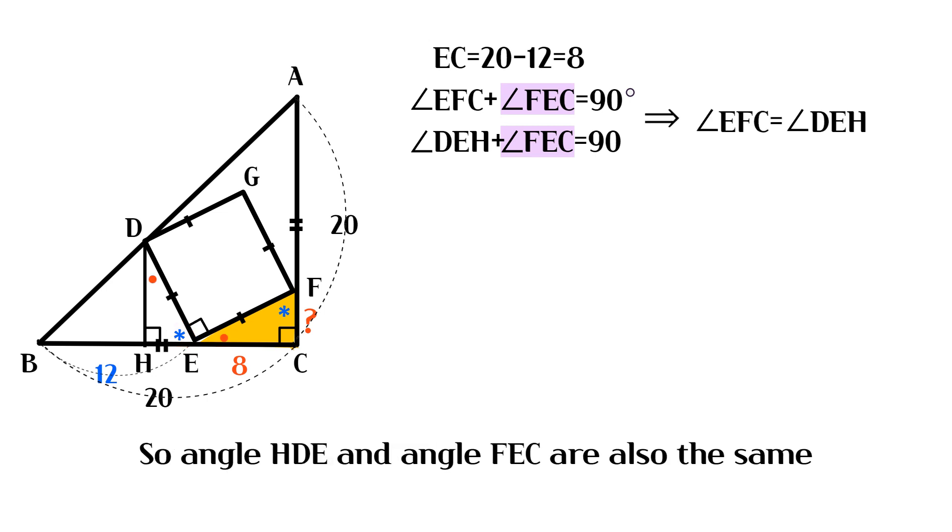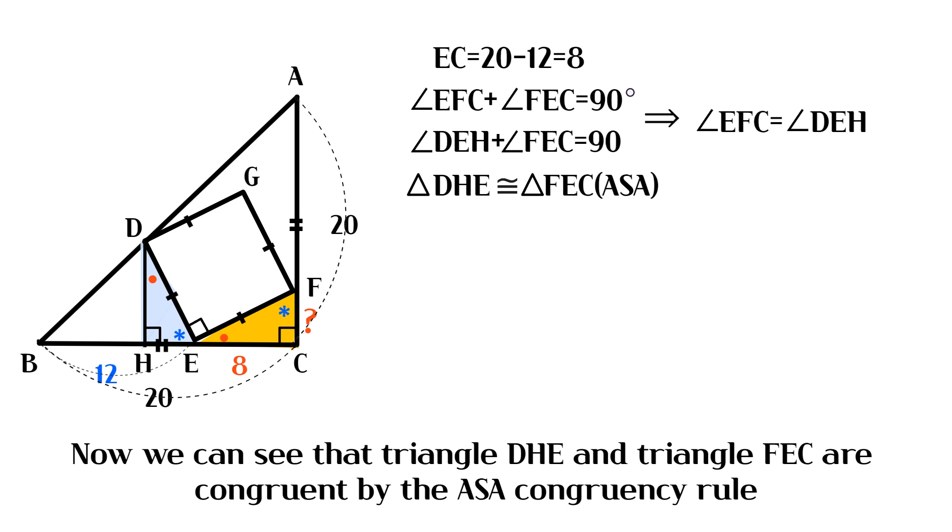So angle HDE and angle FEC are also the same. Now we can see that triangle DHE and triangle FEC are congruent by the ASA congruence rule.